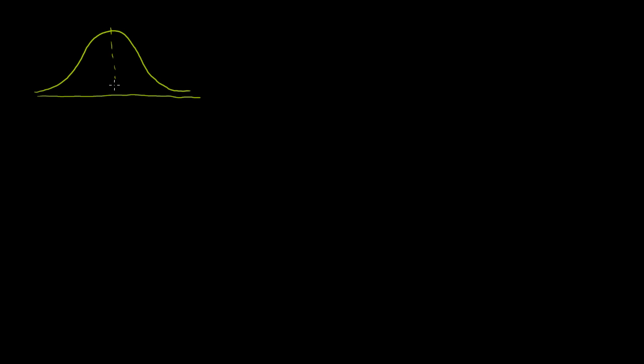I want to build on what we did in the last video. Let's say we have two random variables. I have random variable x, and let me draw its probability distribution. It doesn't have to be normal, but I'll draw it as a normal distribution. This is the distribution of random variable x. This is the population mean of random variable x, and it has some variance.